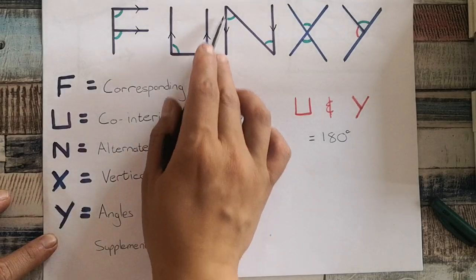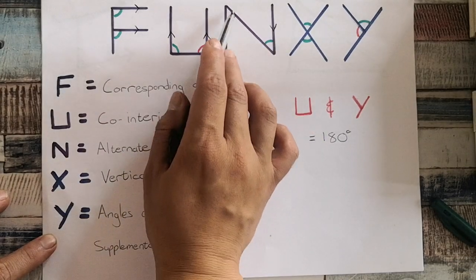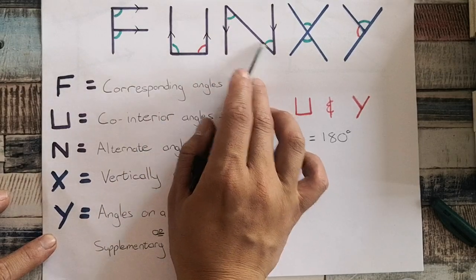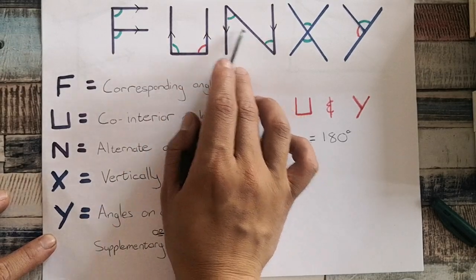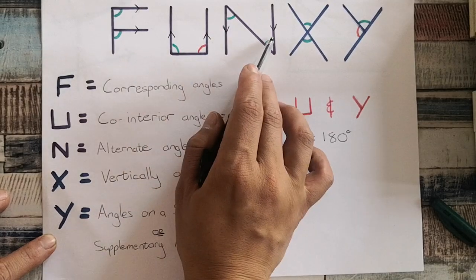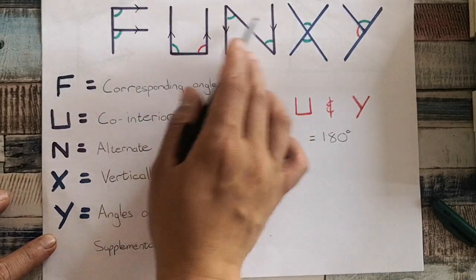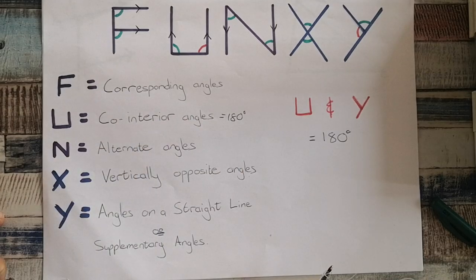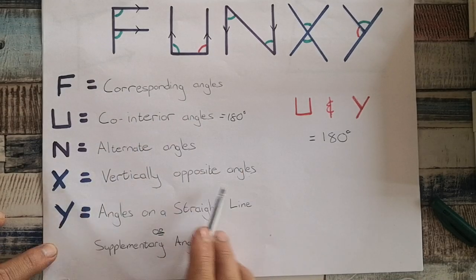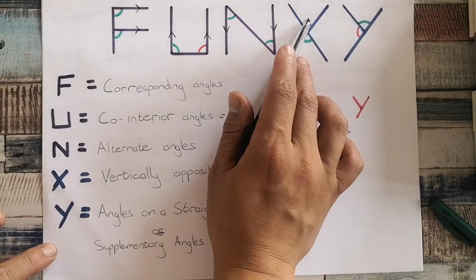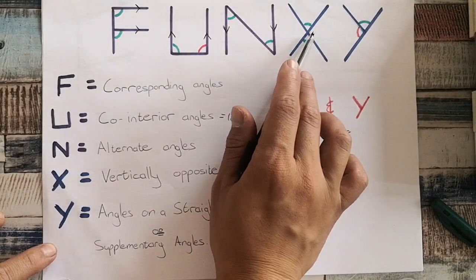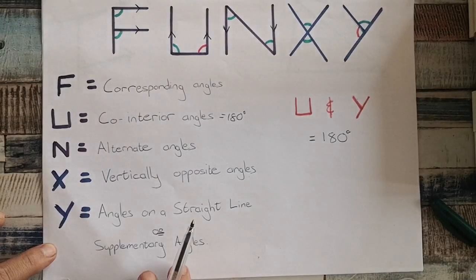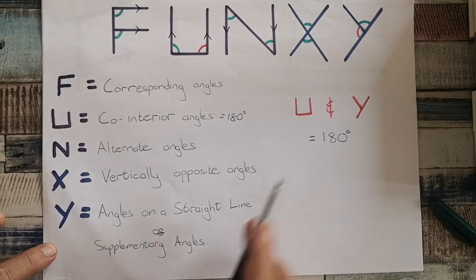N, once again, needs parallel lines. This angle over here — you can see that and that — these two angles are equal to each other as long as there are parallel lines. So FUN can only work if they are parallel lines. My X is vertically opposite, which means that angle is equal to that angle, and this angle over here is equal to that angle, as long as they are straight lines.